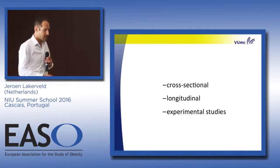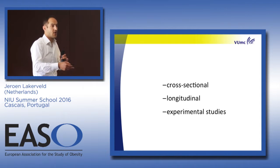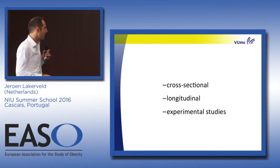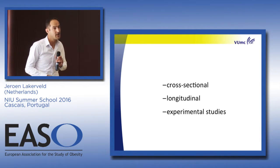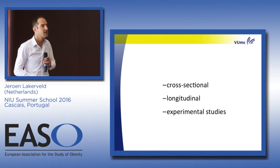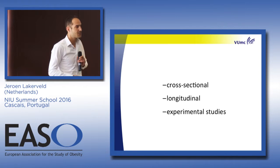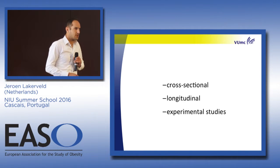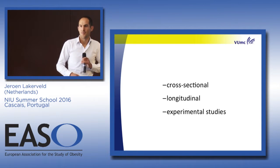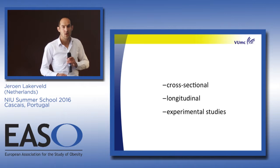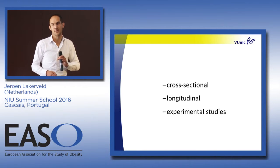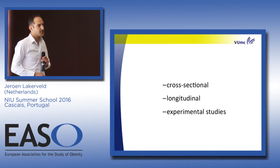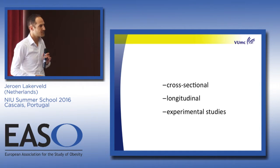What is the evidence? Most evidence comes from cross-sectional research linking an environmental aspect to weight status. There are few longitudinal studies and very few experimental studies — you can imagine why: it's hard and costly to change environments. A few examples exist. Natural experiments are also used — for instance, following people who move to another area, or people who stay in an area that is being renovated and changed.